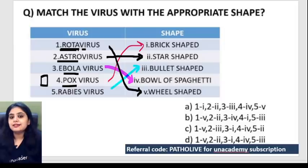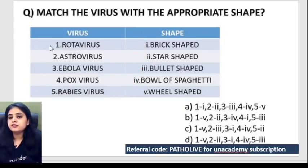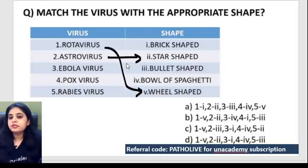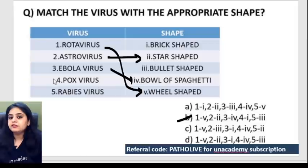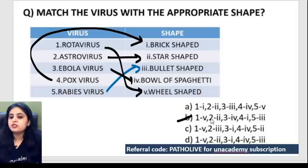Revisiting the match-the-shape question: rotavirus → rotating wheel (option 5), astrovirus → star (option 2), Ebola → bowl of spaghetti (option 4), pox virus → brick/box (option 1), rabies → bullet-shaped. That was the correct matching.